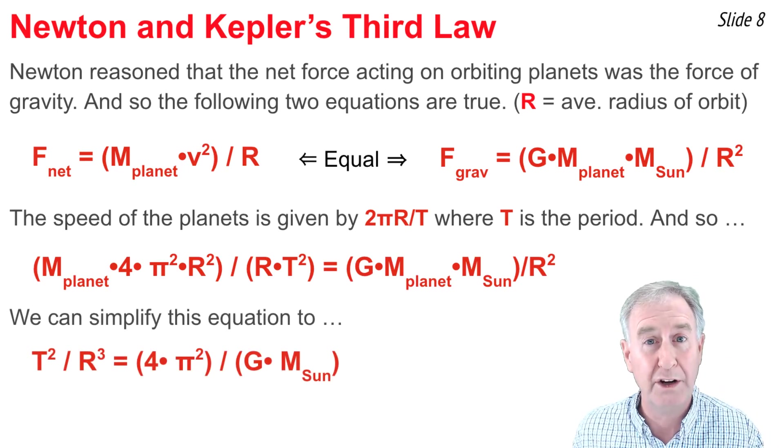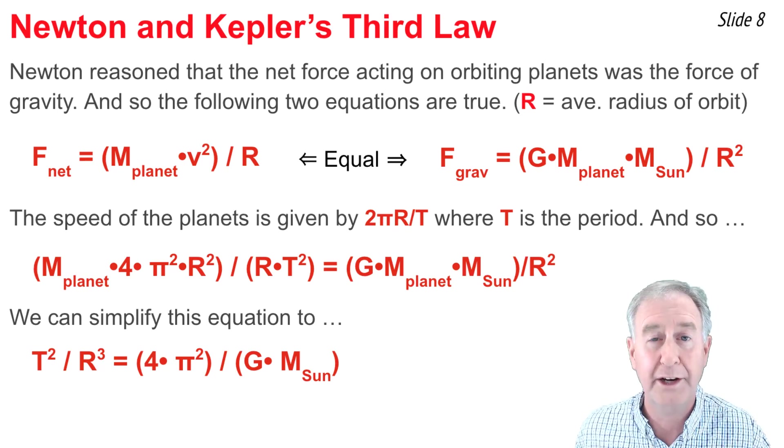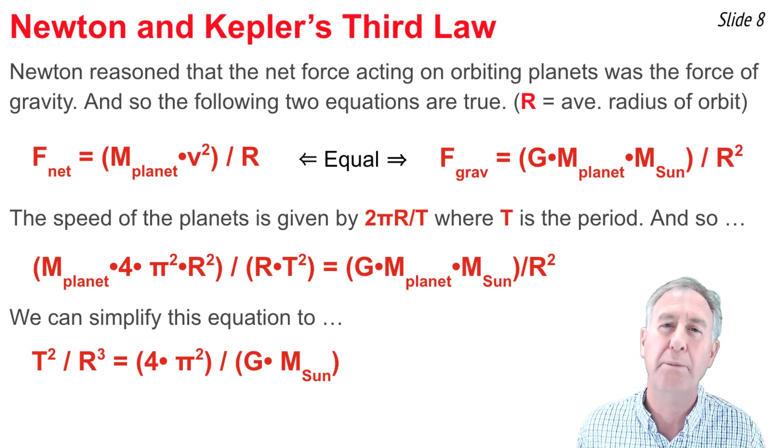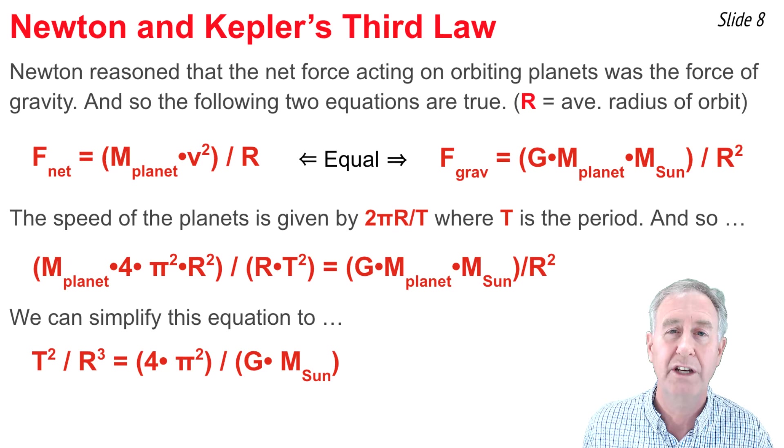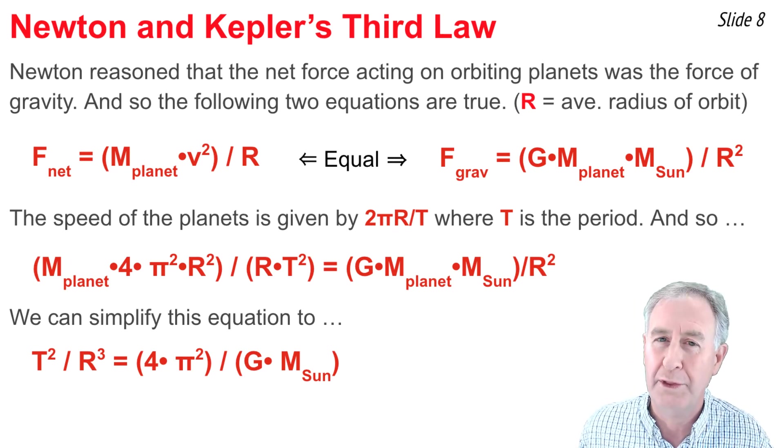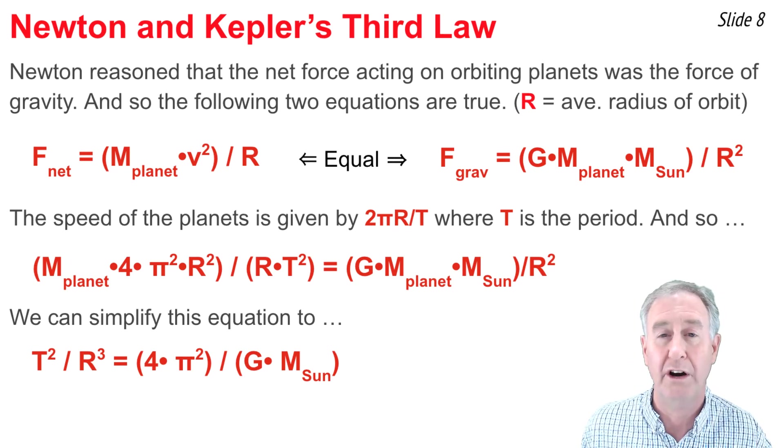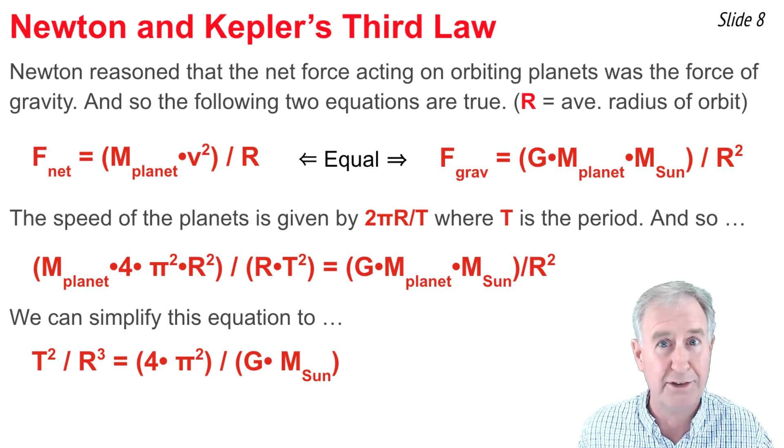Which shows the T² / R³ ratio, that magical planetary ratio, is equal to 4π² divided by G divided by mass of the Sun. Now, you should note that on the right side of the equation are three constants and the mass of the Sun.